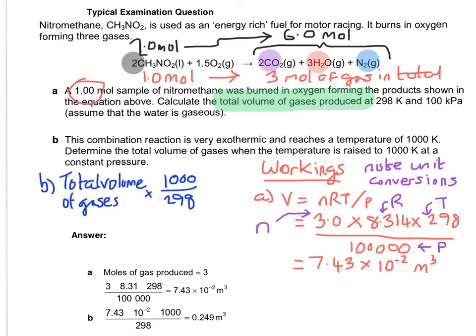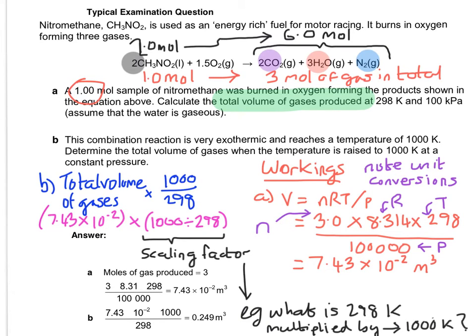I've done it in a slightly different way to that printed version. I've taken my total volume of gases from part A, which is 7.43 times 10 to the minus 2, which is what the total volume would be at 298 K. Now I want to know what they would be at 1000 K. The reason I multiply it by 1000 over 298 is because that gives me the scaling factor. In other words, how many times 298 has to be multiplied to get to 1000. If we plug those numbers into our calculator, it gives us 0.249 metres cubed.